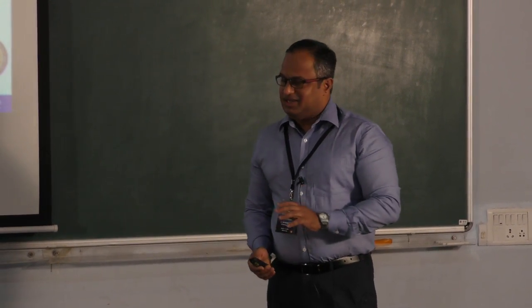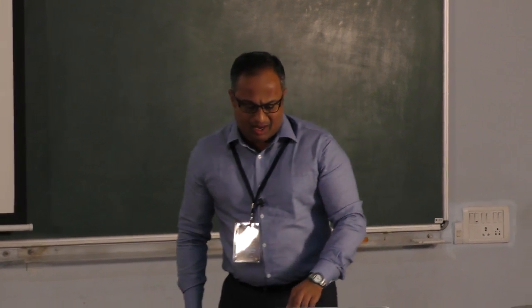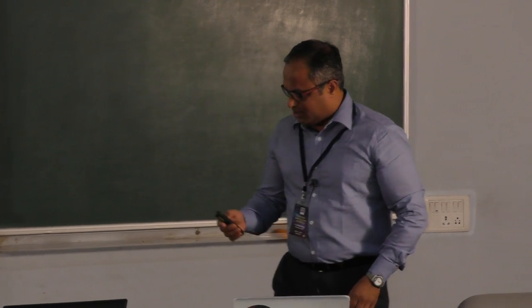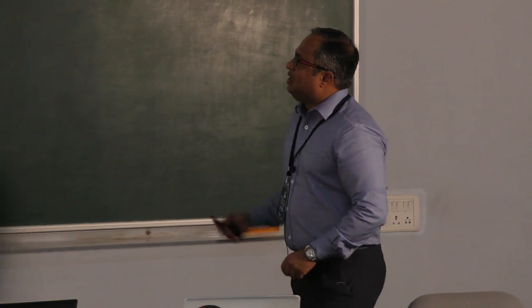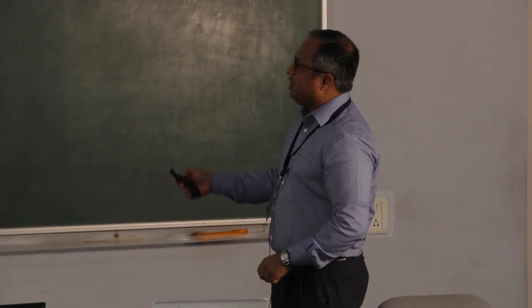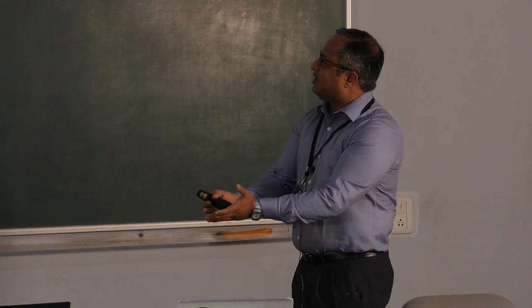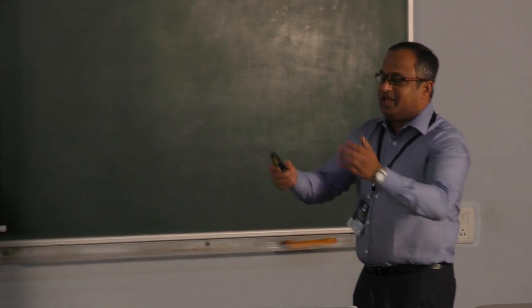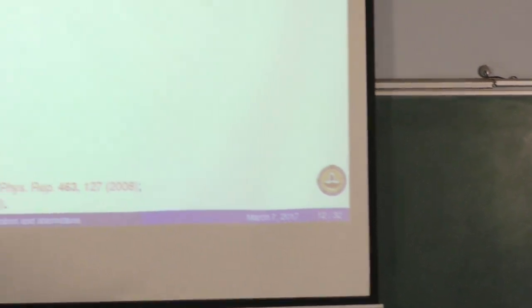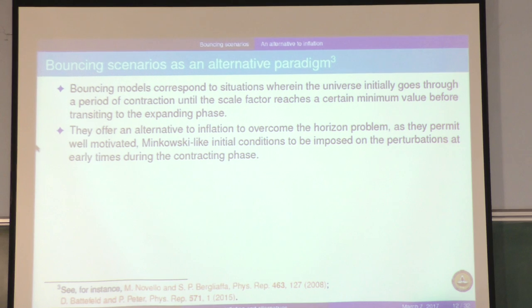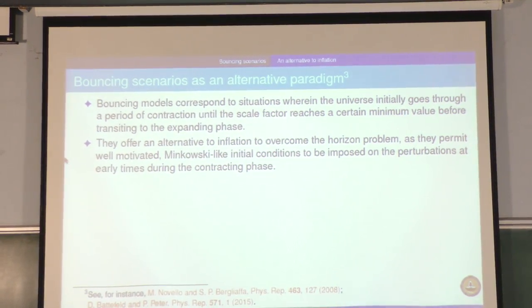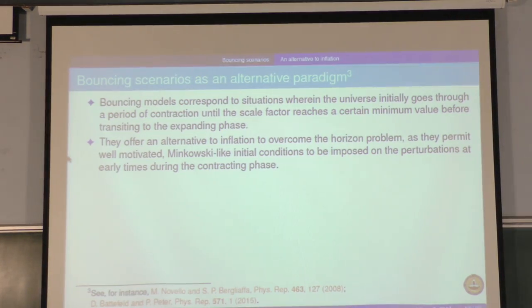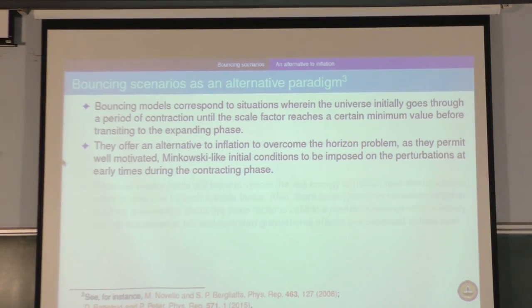It is in this situation that we started considering bouncing scenarios. What are these scenarios? Well, they correspond to situations wherein the universe initially goes through a period of contraction until the scale factor reaches a minimum and then begins a phase of expansion. They offer an alternative to inflation. At very early times during the contracting phase, you can impose sub-Hubble initial conditions, very much like you can in the context of inflation. This has been recognized for quite a long while.